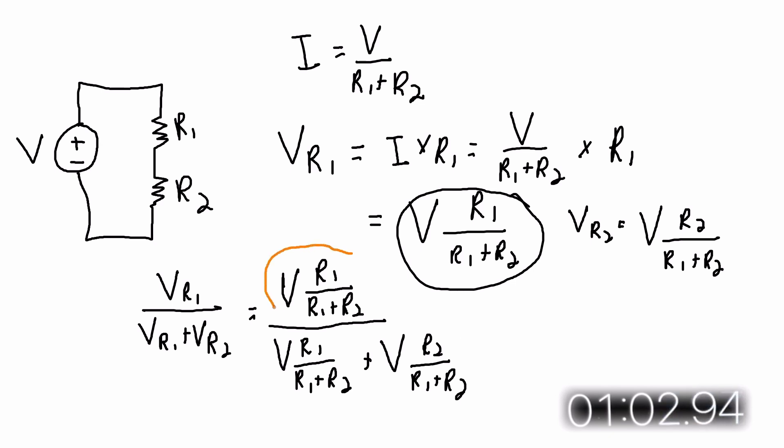You can see that there is an element of V over R1 plus R2 in each of the terms in this equation. So that can be factored out and eliminated. And we are left with R1 over R1 plus R2, which shows that the resistor's voltage to the total voltage ratio is the same as the resistor's resistance to total resistance ratio.